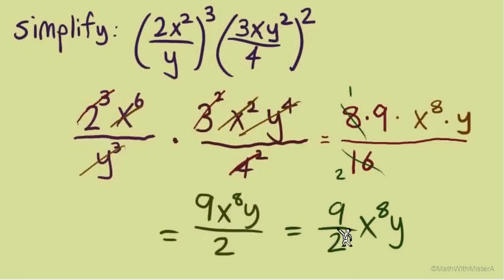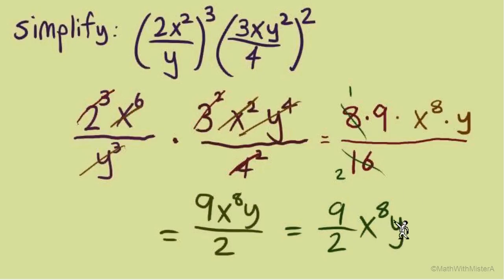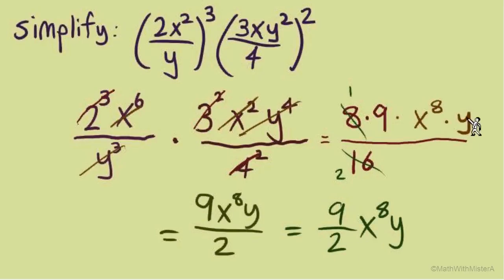For cleanup: 8 over 16 simplifies to 1 over 2, so our result is 9x to the eighth y over 2. We can write the coefficient 9/2 out front: nine-halves x to the eighth y. Be careful not to place the x to the eighth y in the denominator alongside the 2 — they belong in the numerator as shown.